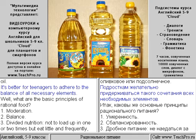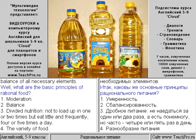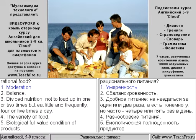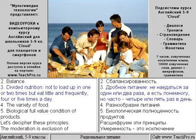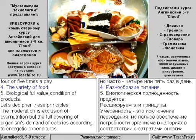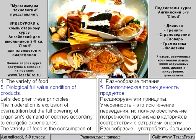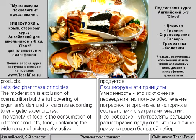It's better for teenagers to adhere to the balance of all necessary elements. The basic principles of rational food are: 1. Moderation. 2. Balance. 3. Divided nutrition — not to load up in one or two times, but eat little and frequently, four or five times a day. 4. The variety of food. 5. Biological full value condition of products.